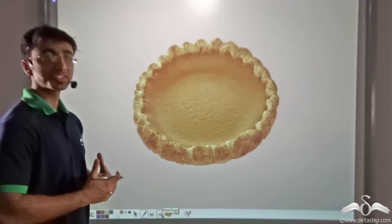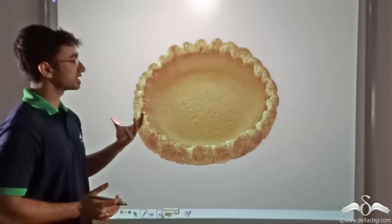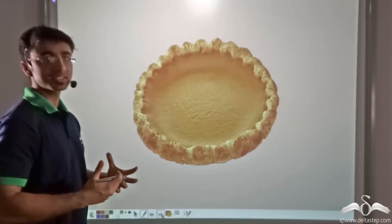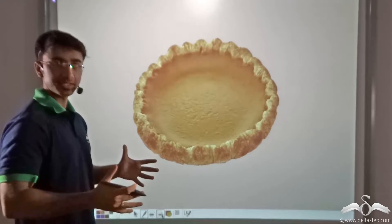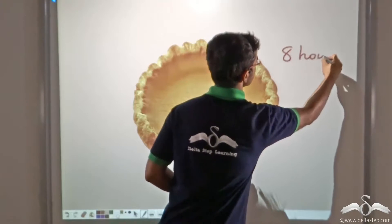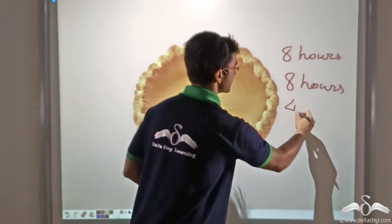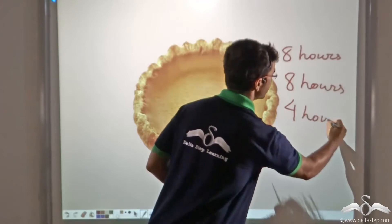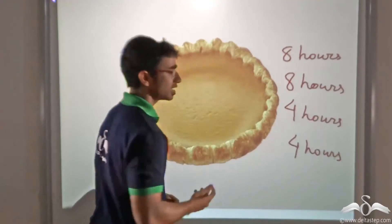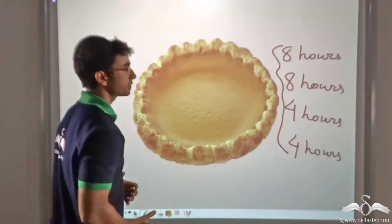Pie charts are useful not only in case of circular objects but in case of any object or any data that you consider. It helps us represent the data in a pictorial format in the form of shares of a pie. Now let's say we consider some other data - your activities across a day. For example, you spend eight hours sleeping, eight hours at school, four hours watching TV or playing, and the remaining four hours doing all your other activities like eating, studying, etc. This is the share of activities across a day for you.